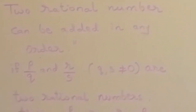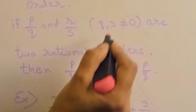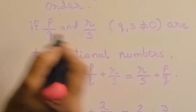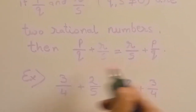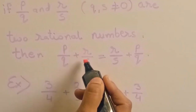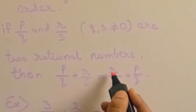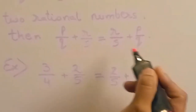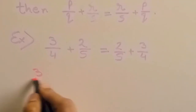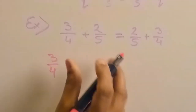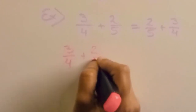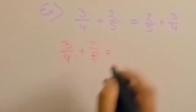If p by q and r by s are two rational numbers — with the condition that q and s cannot be 0 (denominator cannot be 0) — their sum is always equal. You can add p by q plus r by s, or r by s plus p by q; their sum is always equal.